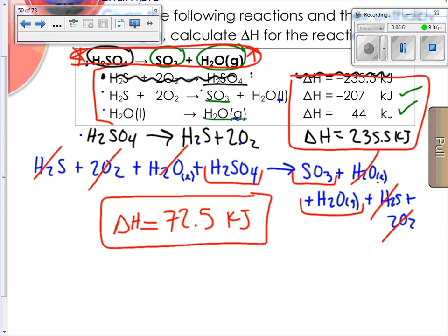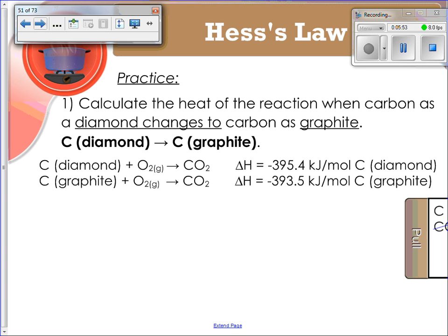Let's do another example. Calculate the heat of the reaction when carbon as a diamond changes to carbon as graphite. I'm going to start with the first one. Diamond is in this sub-reaction as a reactant with the same number of moles. So this change in H is okay.